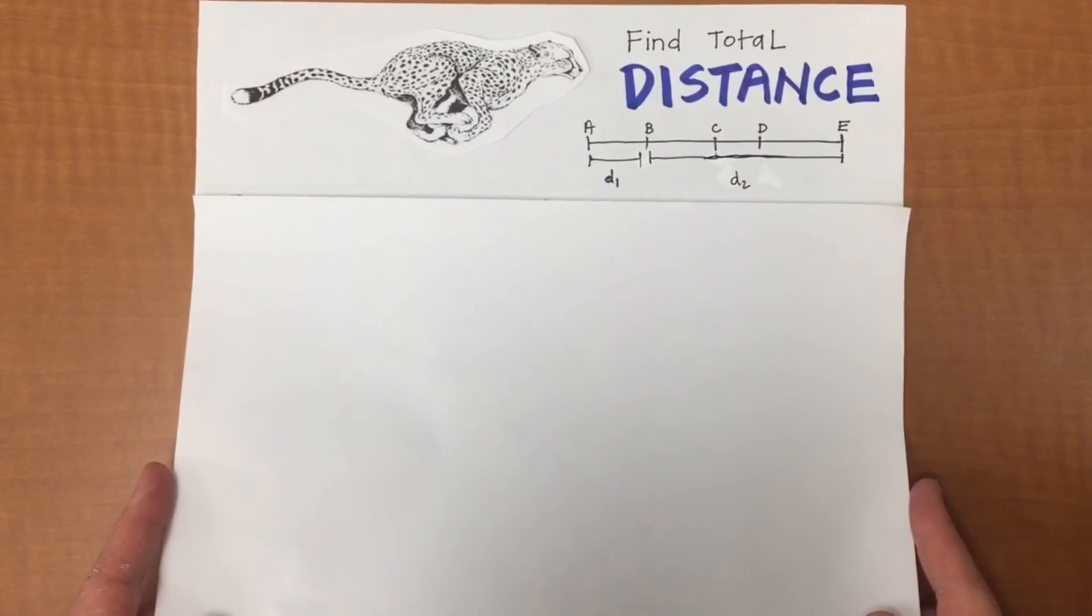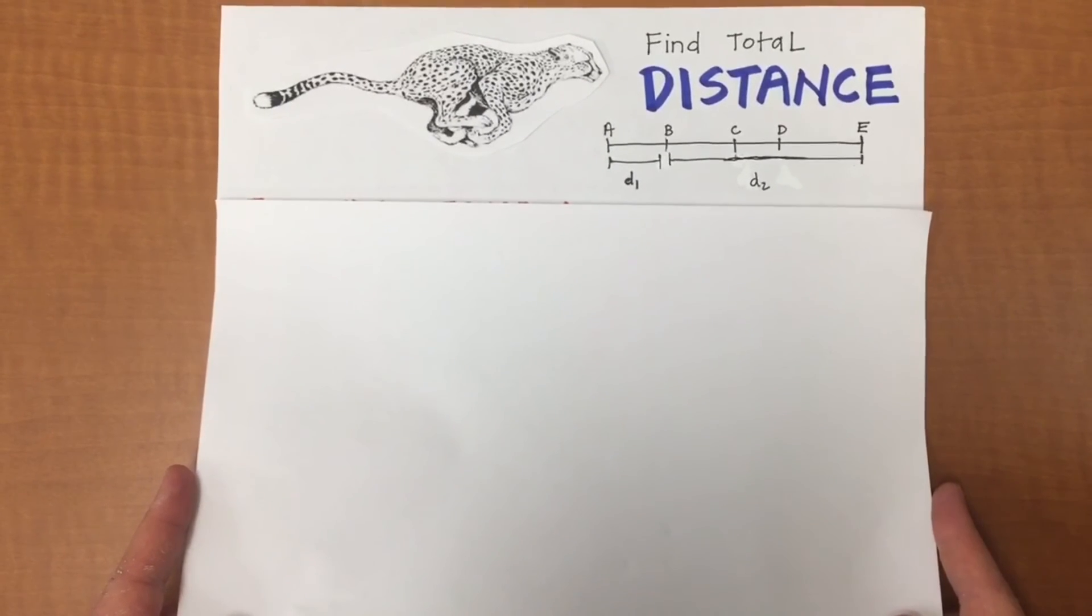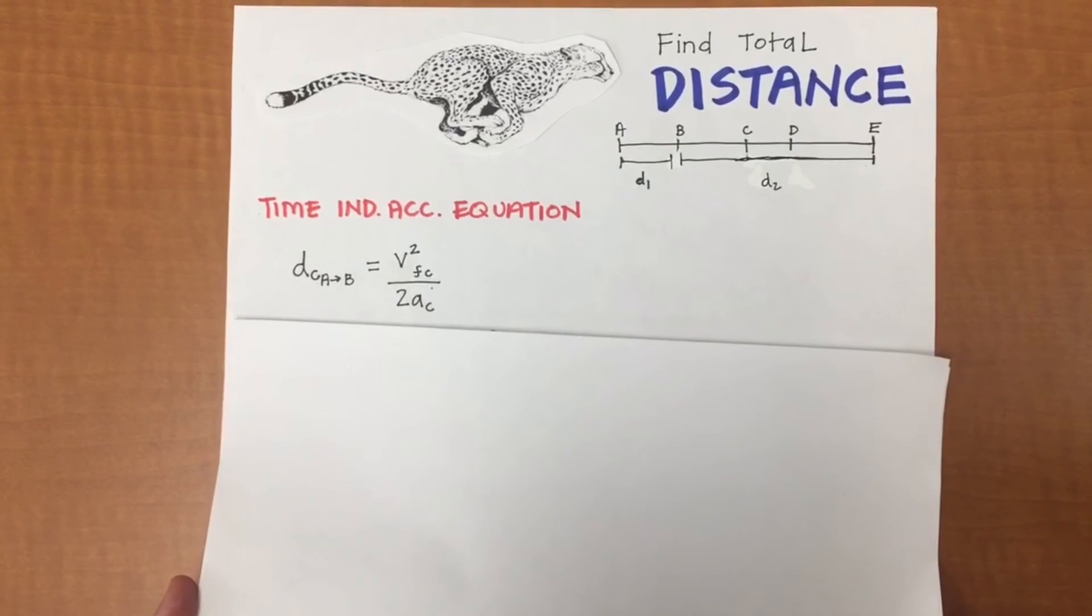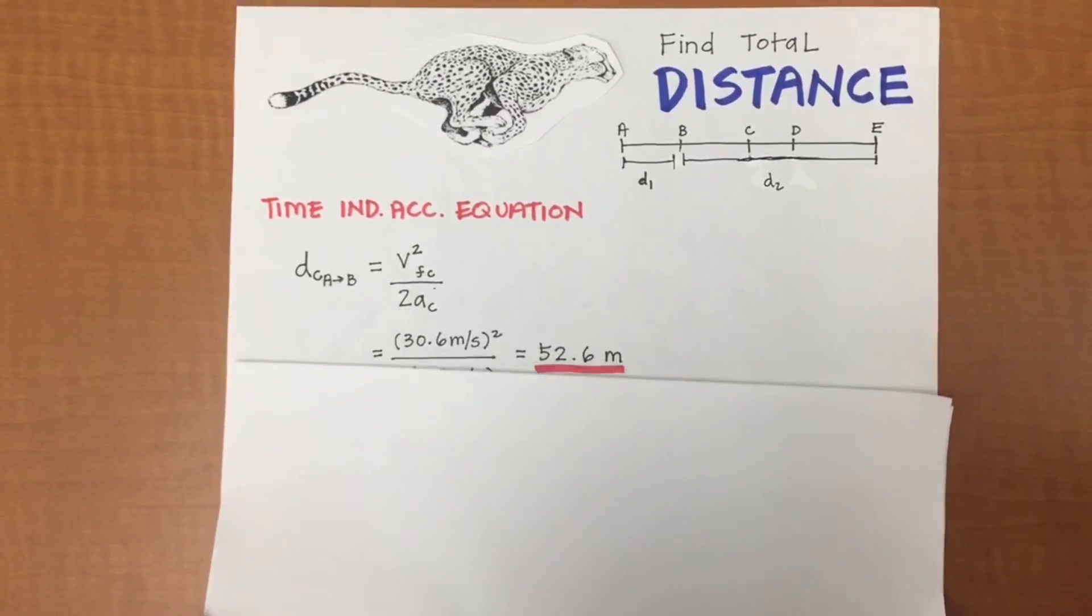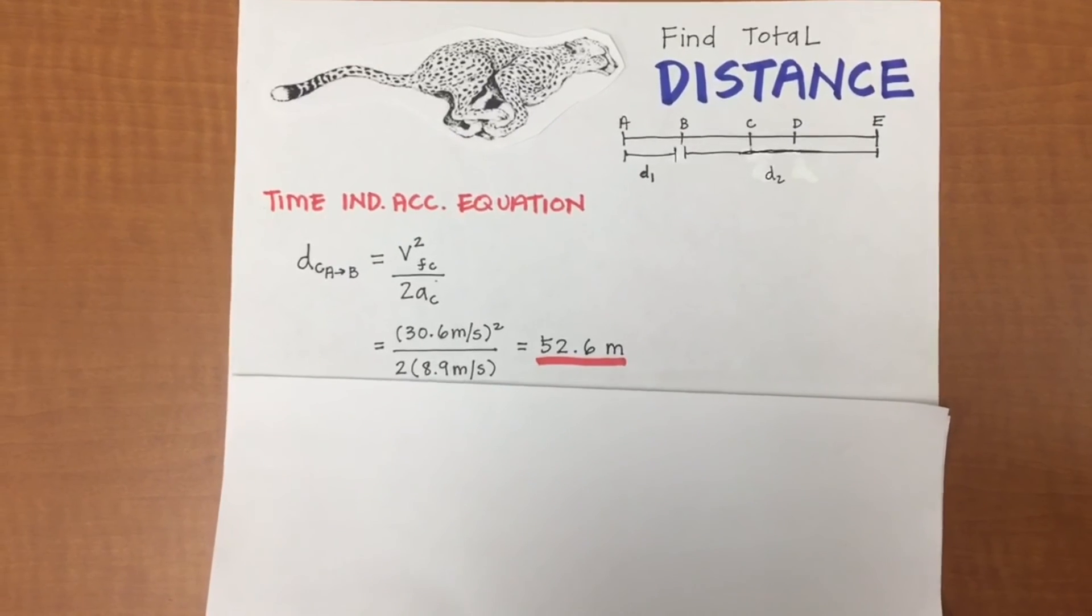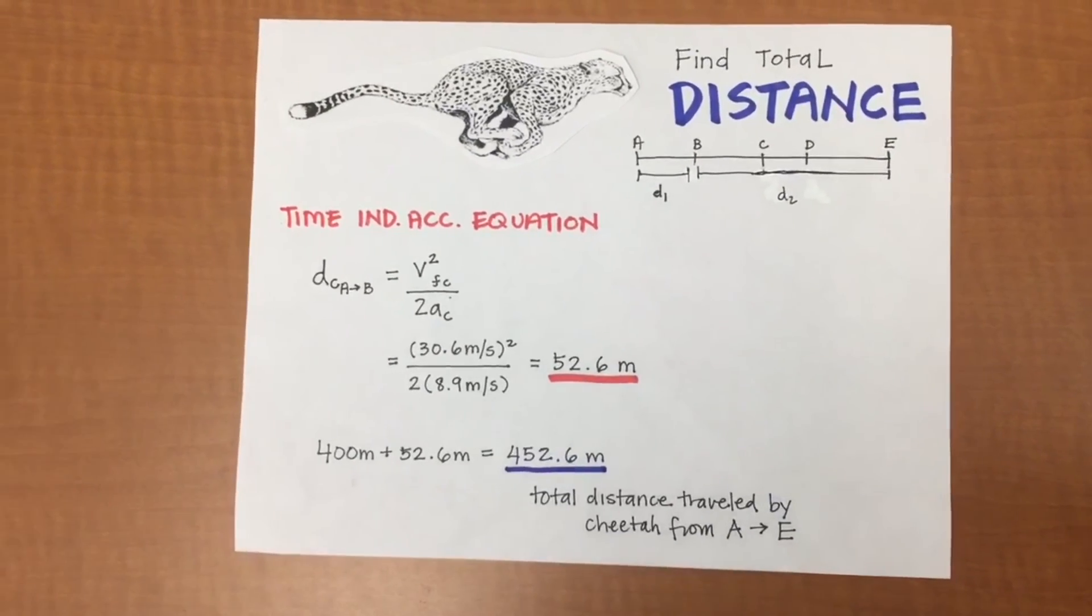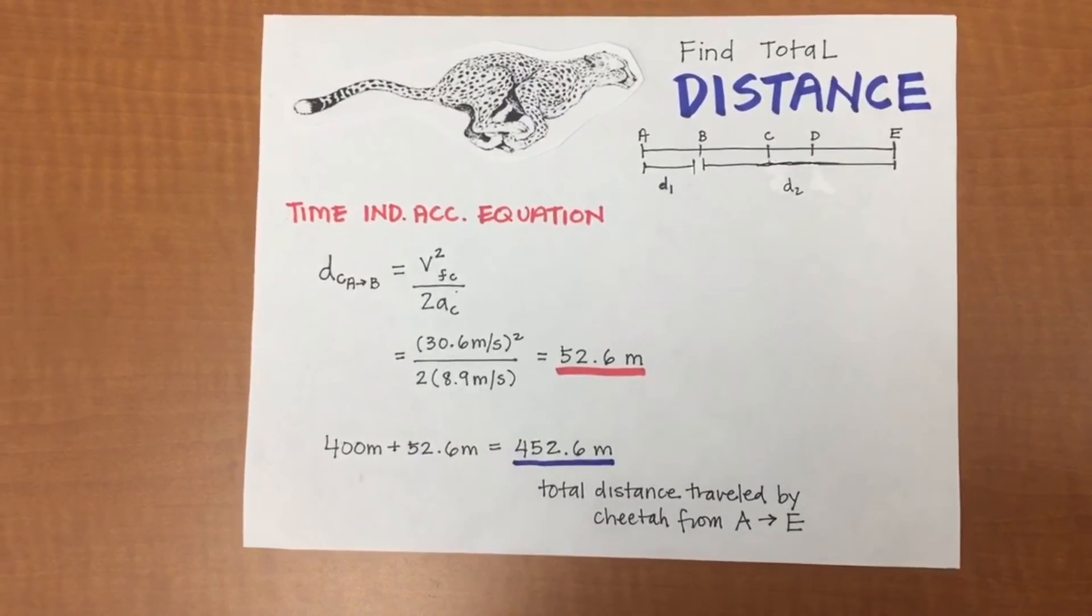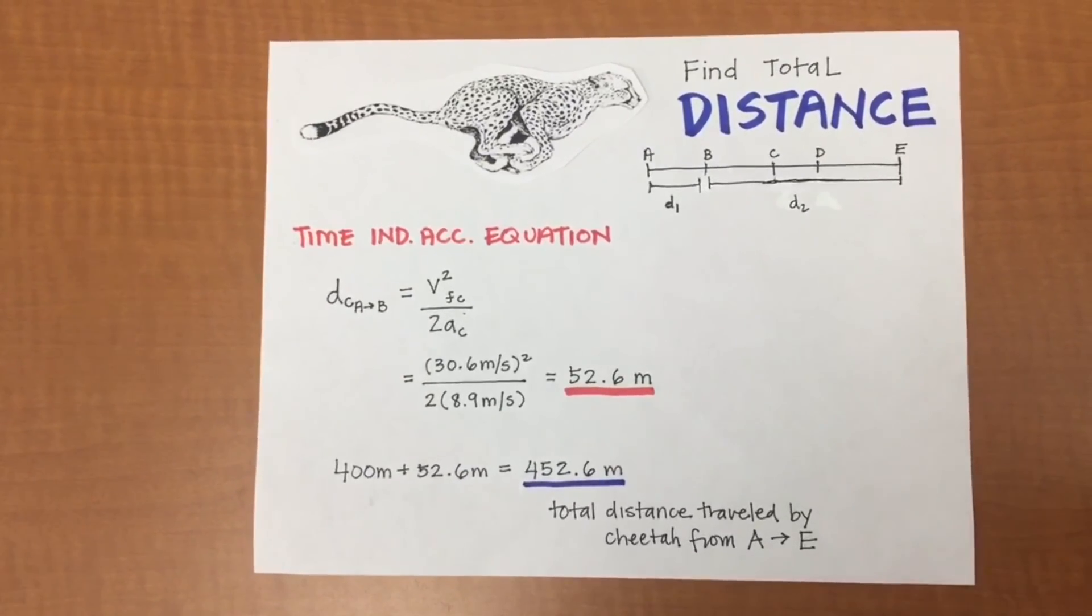Next we need to find the total distance the cheetah runs for. In order to do that we need to look at the amount of distance it covers while accelerating. In order to do this we look at the velocity squared over 2 times the acceleration. In the case of the cheetah this gives us 52.6 meters. We already know how long the cheetah runs for when it's at top speed, which is 400 meters. When we add 52.6 to that we get 452.6 meters, which is the total distance traveled from the cheetah from point A to point E.